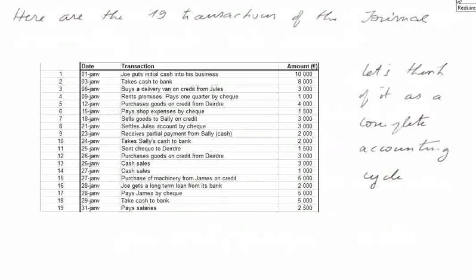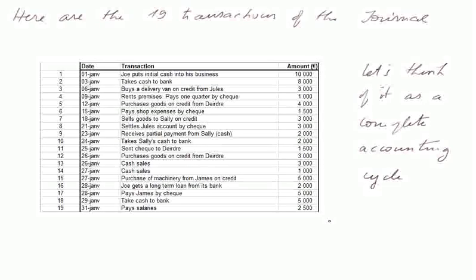Here are the 19 transactions in the journal. The first one is Joe putting initial cash into his business. Then we took cash to the bank. The firm bought on credit a delivery van. We rented premises, etc. We think of it as a complete accounting cycle for the sake of learning. Of course, a real complete cycle has thousands of entries.